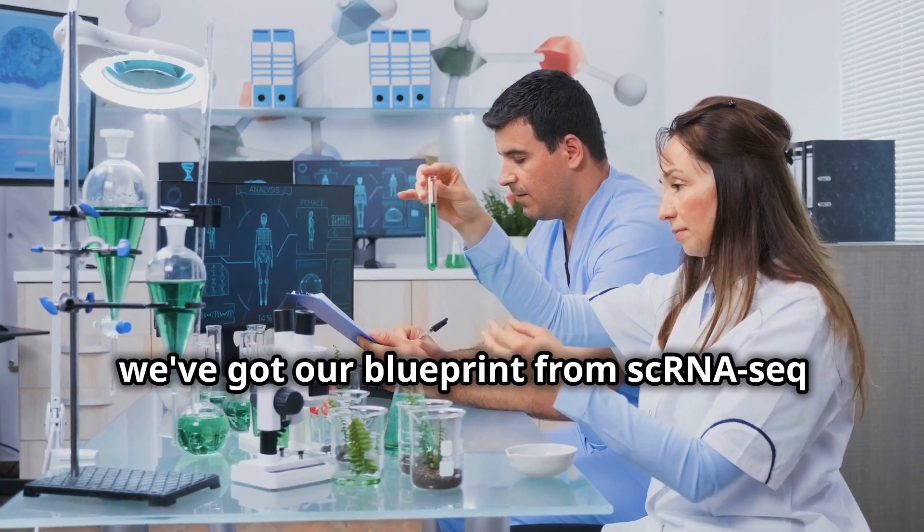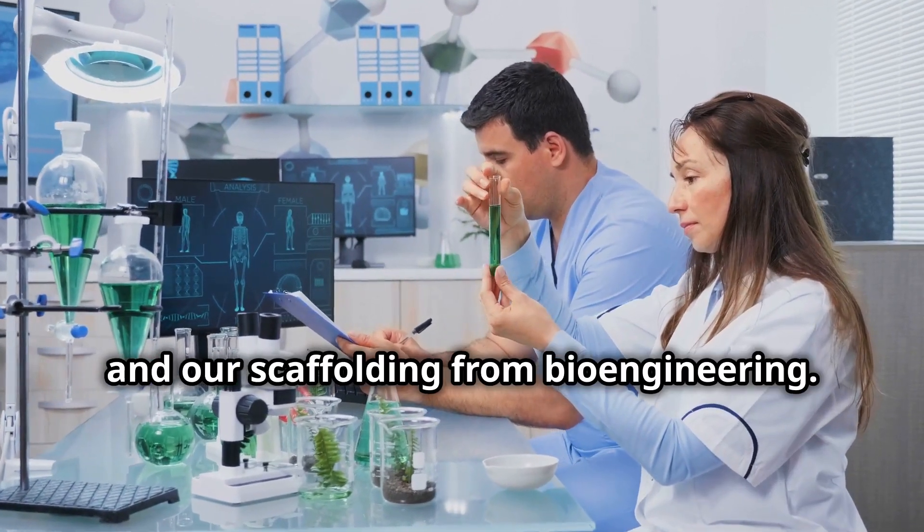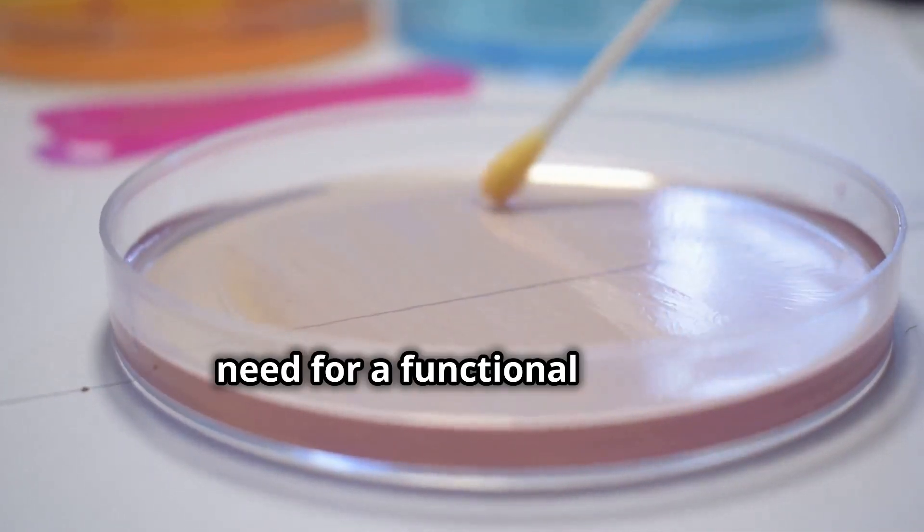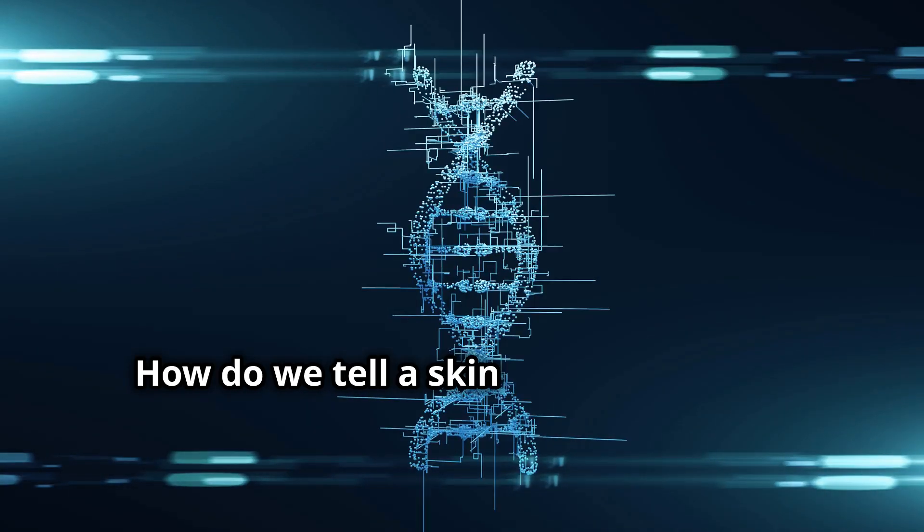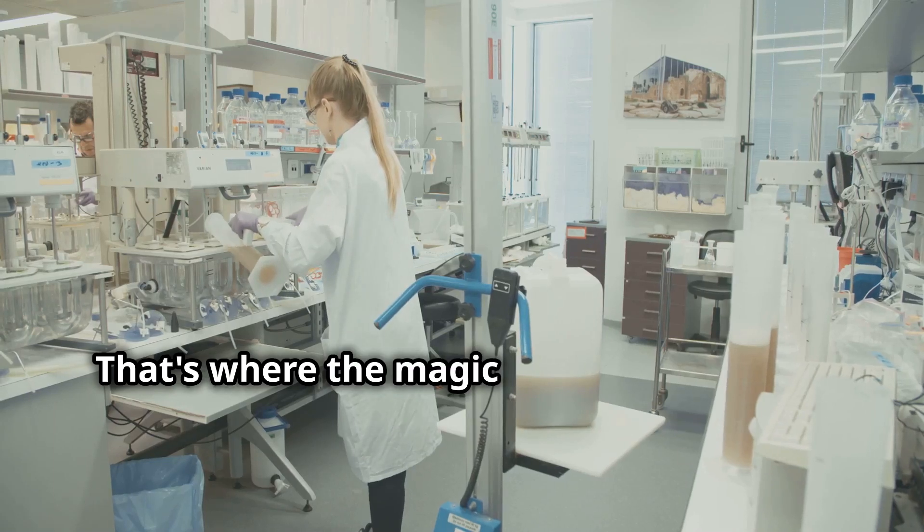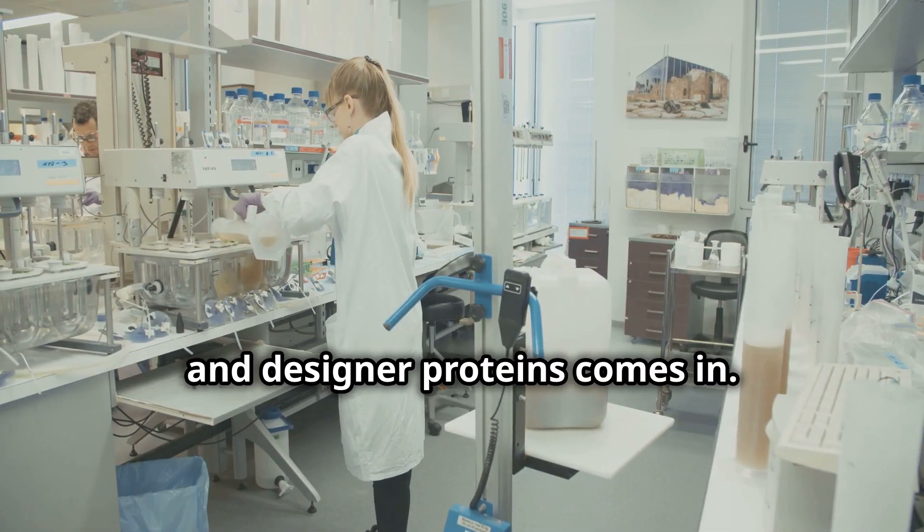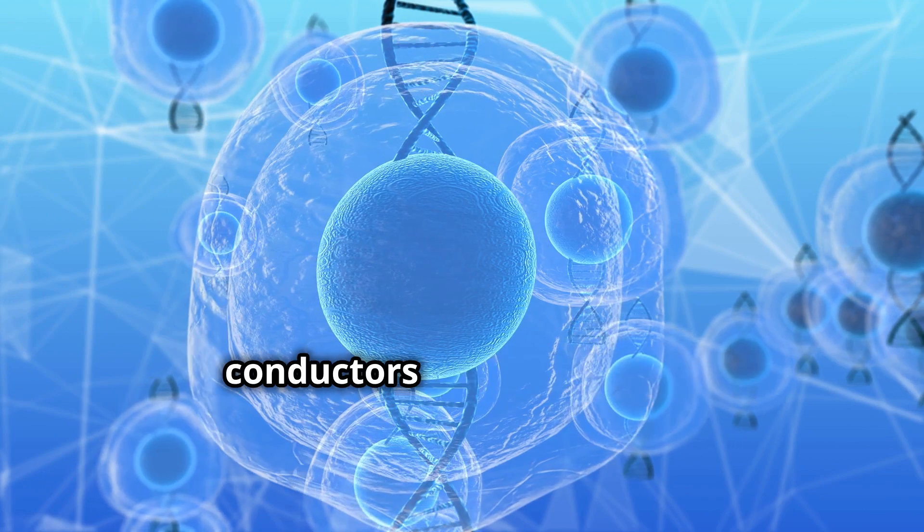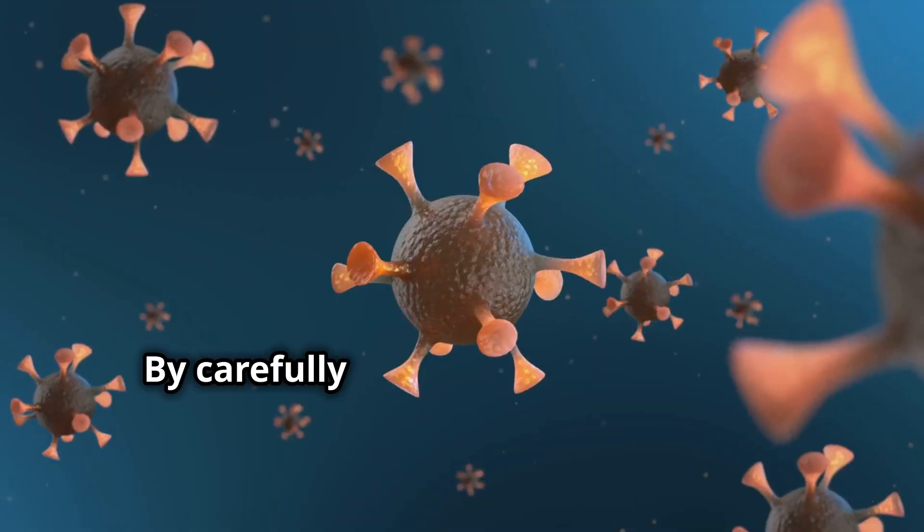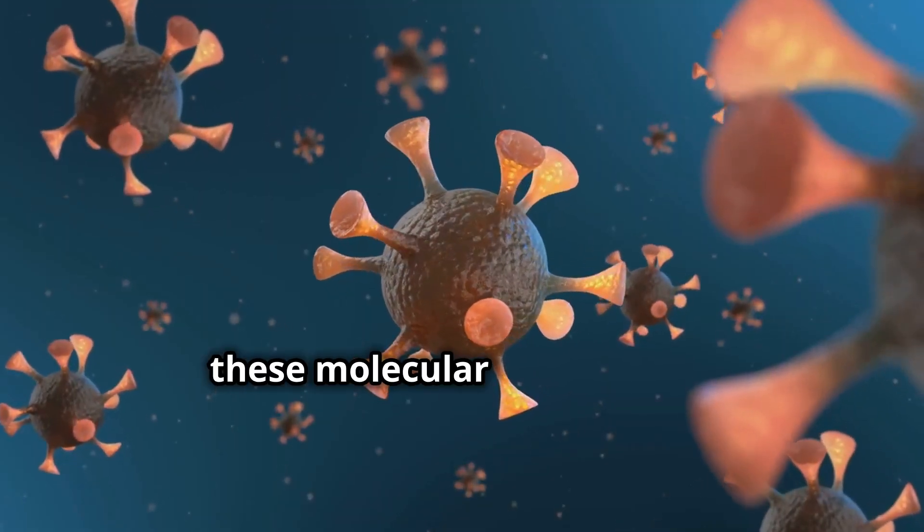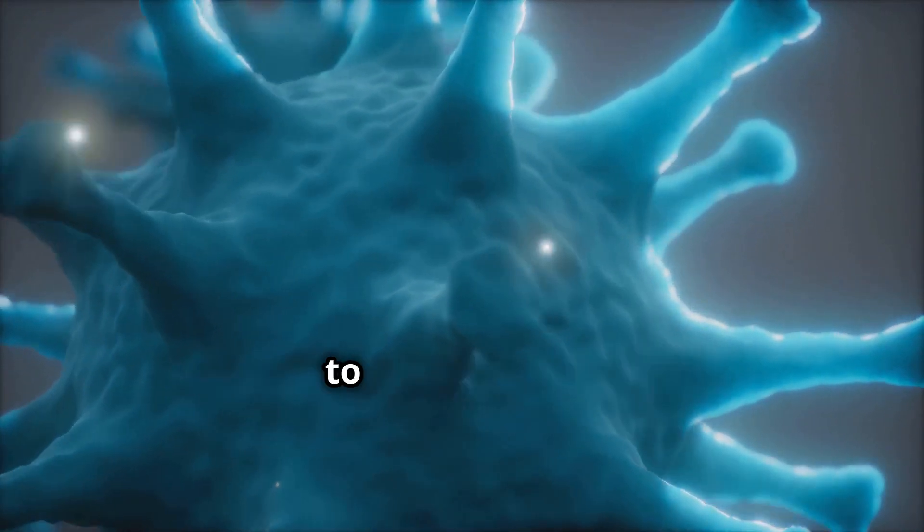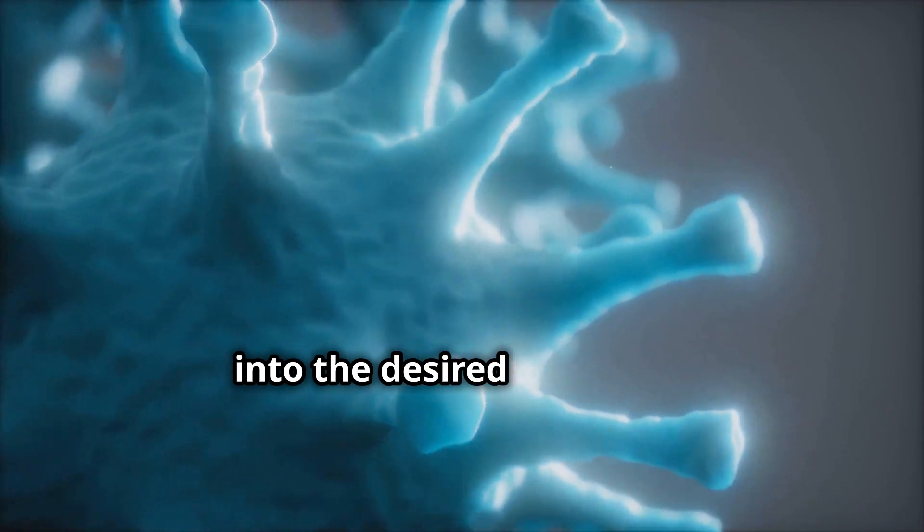Now we've got our blueprint from scRNA-seq and our scaffolding from bioengineering. But how do we actually direct the cells to become the specific types of cells we need for a functional organ? How do we tell a skin cell to become a heart cell or a urine cell to become a kidney cell? That's where the magic of small molecules and designer proteins comes in. Think of these molecules as the conductors of an orchestra, each one carrying a specific message that influences cell behavior. By carefully selecting and combining these molecular messengers, scientists can direct stem cells, those blank slates of the body, to differentiate or specialize into the desired cell types.